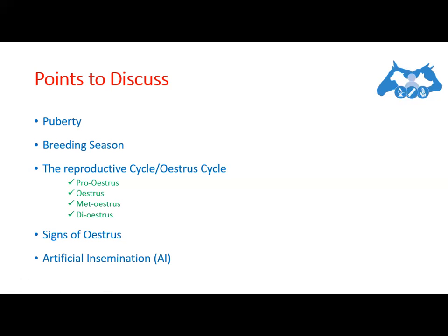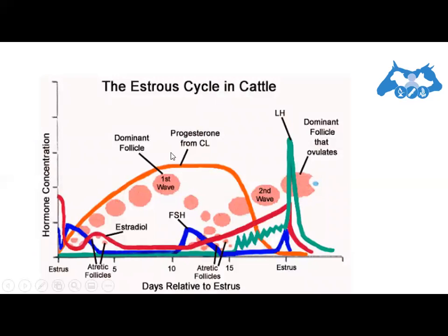Now let's move towards the reproductive cycle, specifically the estrous cycle in cattle and buffalo. This cyclic process is called the estrous cycle and it consists of a definite sequence of events, both physiological and behavioral. The estrous cycle of the cow or buffalo starts after puberty and occurs approximately every 21 days, on average 17 to 24 days, except during pregnancy.